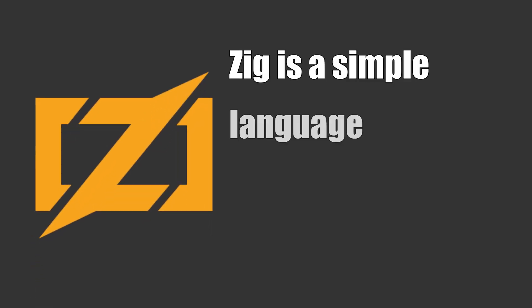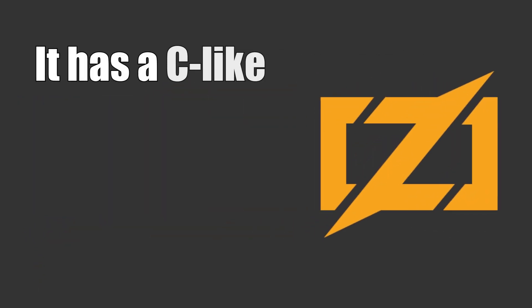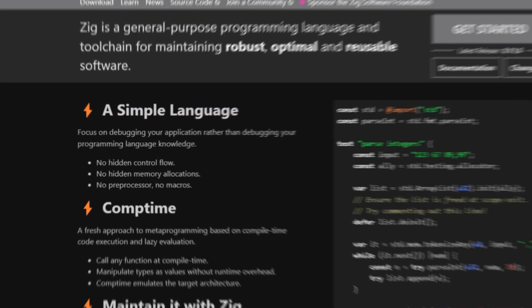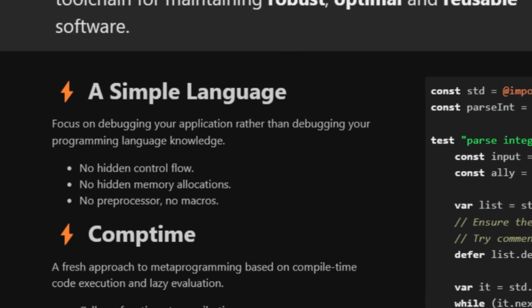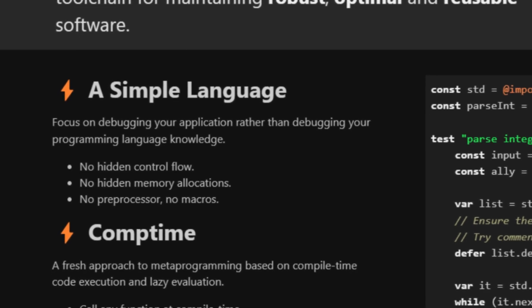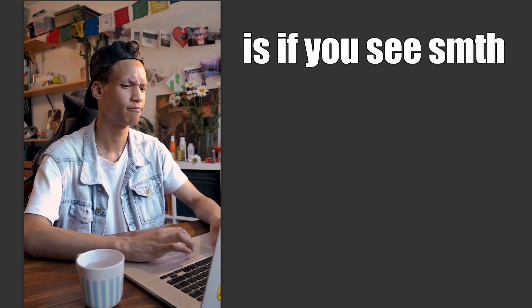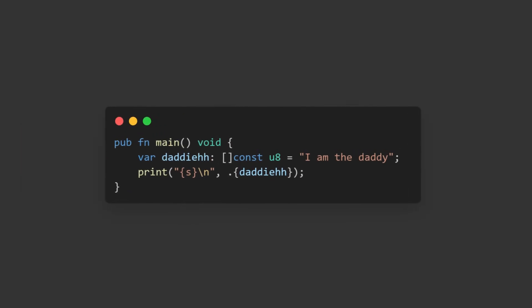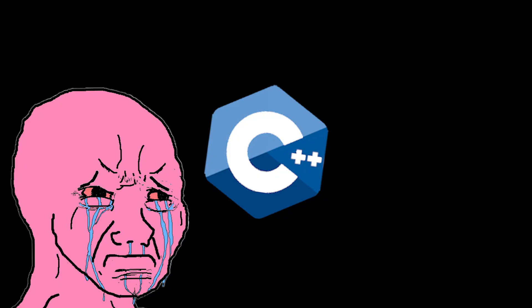For example, simplicity. Zig is a simple language that follows the principle of less is more. It has C-like syntax that is easy to read and write. It has no hidden control flows, no memory allocations, no preprocessor, no macros. What that means is if you see something and you think it's a function, it is a function. If you see a variable, it is a variable.